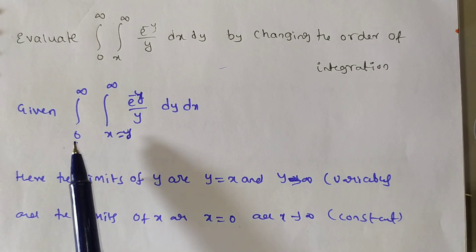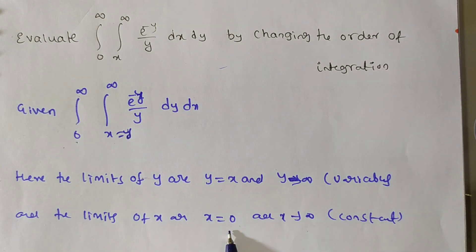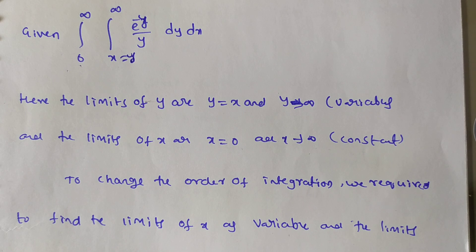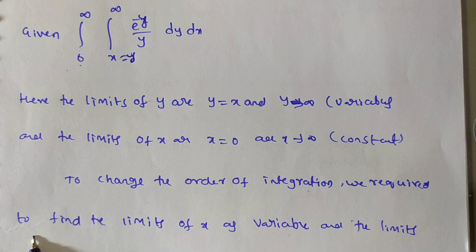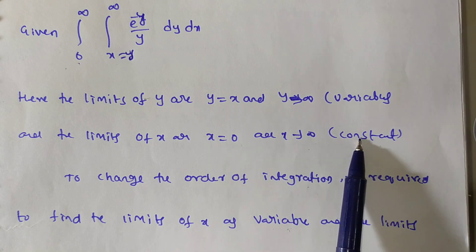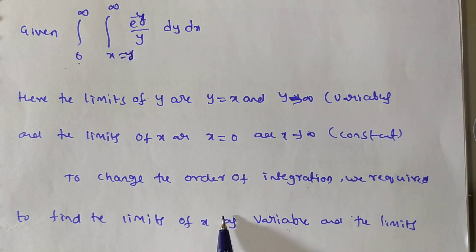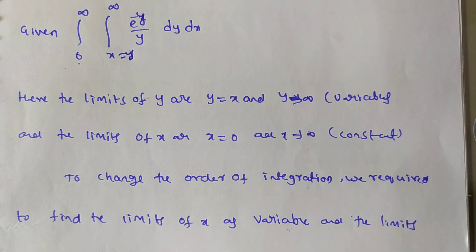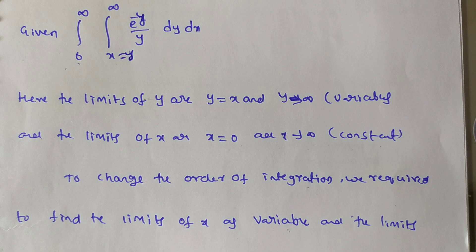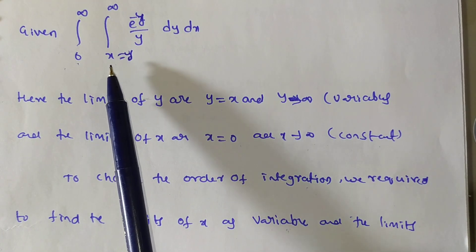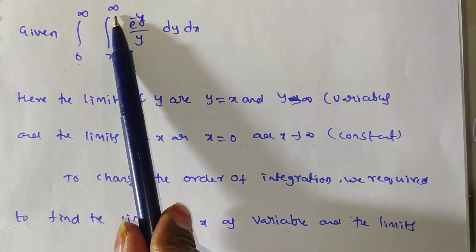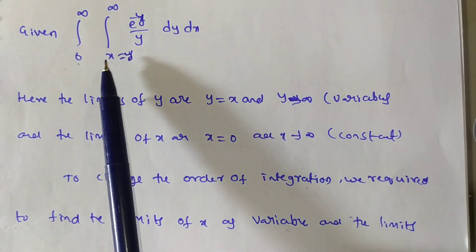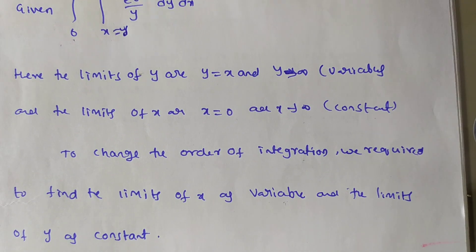The x limits are 0 to infinity. To change the order of integration, we need to find new limits: y limits become constant and x limits become variable. The given limits are: x = y, x = infinity, y = 0, y = infinity. Now we find the intersecting points and draw the region.